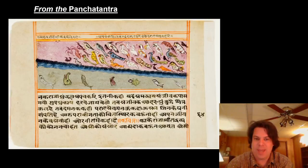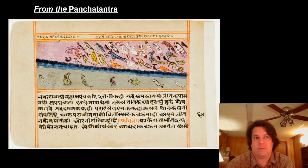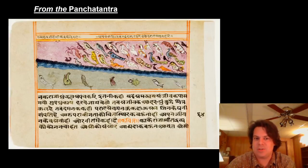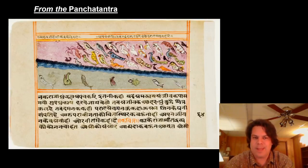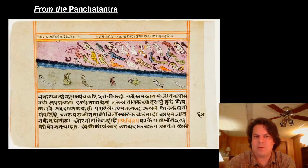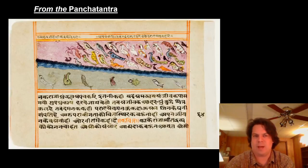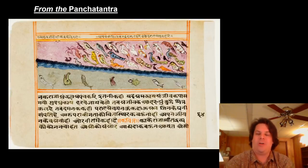The Panchatantra has a frame story, and then the animal fables — just like the Myth of the Sun's Eye. The frame story is that there's a king who has three sons who are going to be bad princes. The king hires the sage Vishnu Sarma to teach them statecraft, and the way he does it is by telling them animal fables — that's the five books. All the fables in the Panchatantra have this air of statecraft about them: how to deal with enemies, how to make allies, how to know when to break treaties — all told as animal fables.